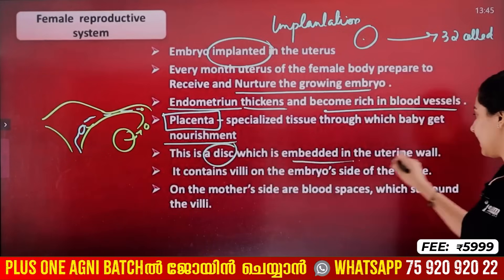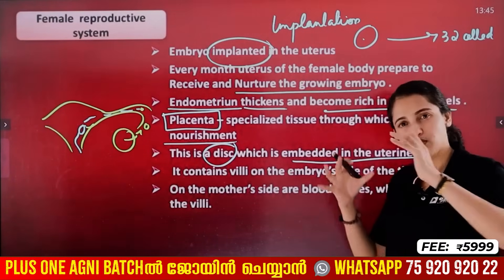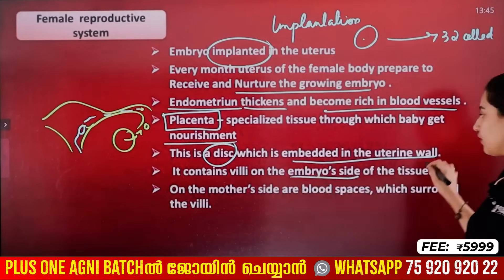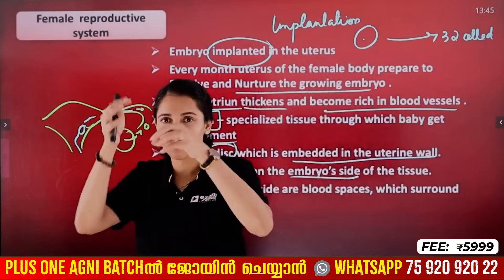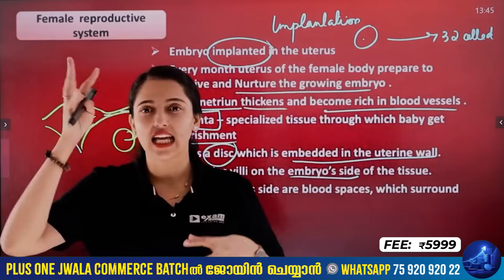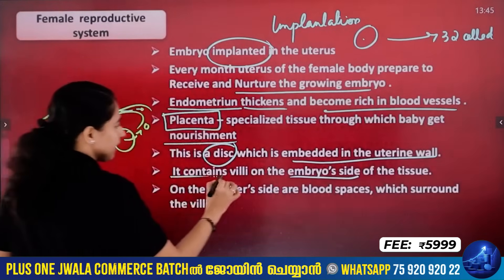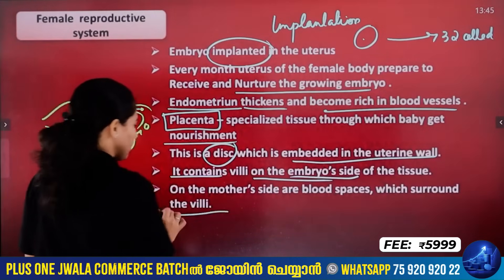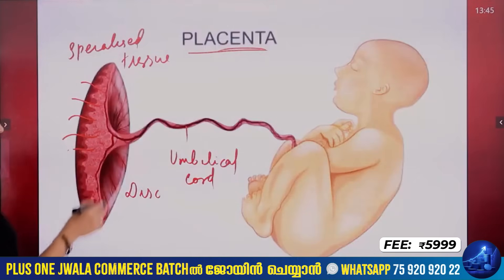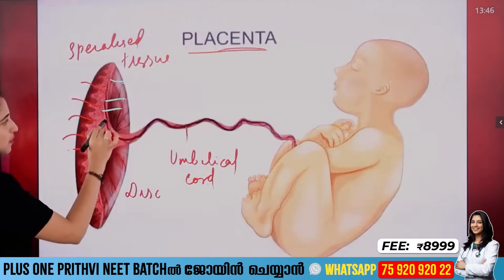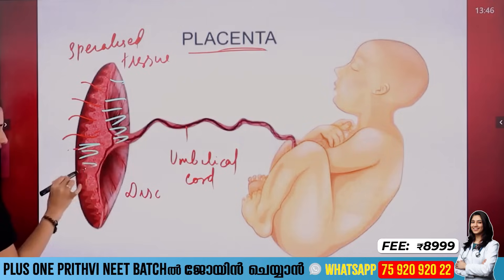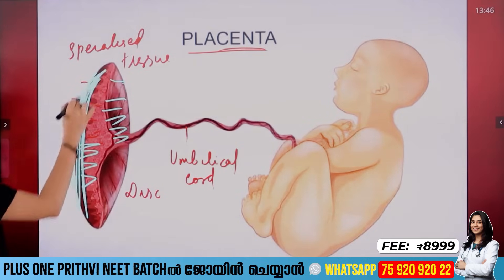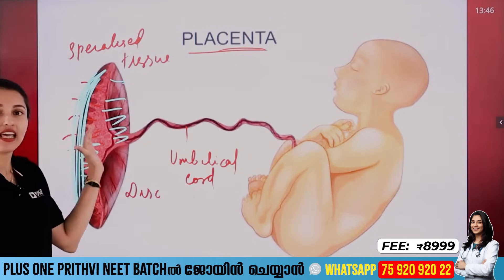The placenta is a disc embedded in the uterine wall. It contains villi on the embryo side of the tissue — finger-like projections. On the mother's side are blood spaces which are surrounded by the villi. If you look at the placenta, you have finger-like projections called villi, and blood spaces in the uterus.